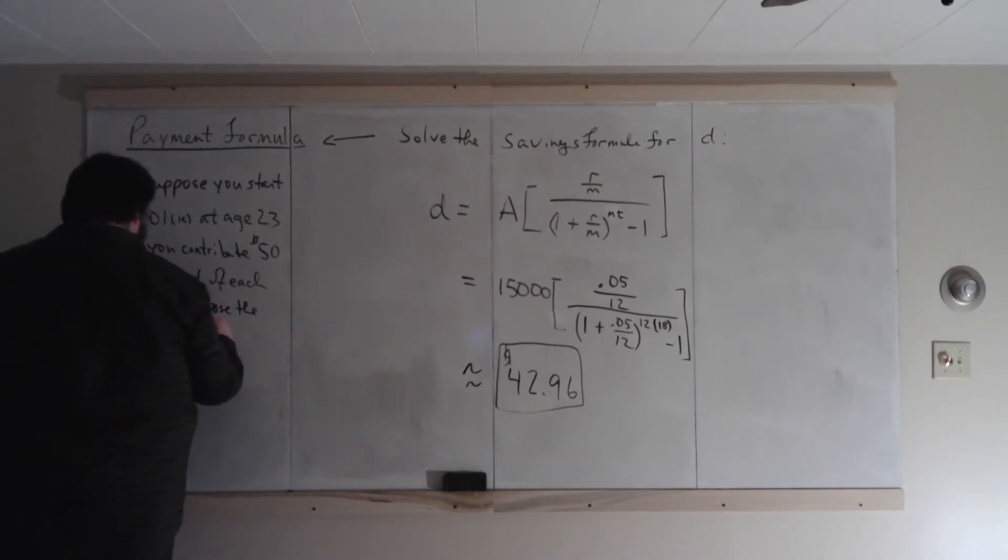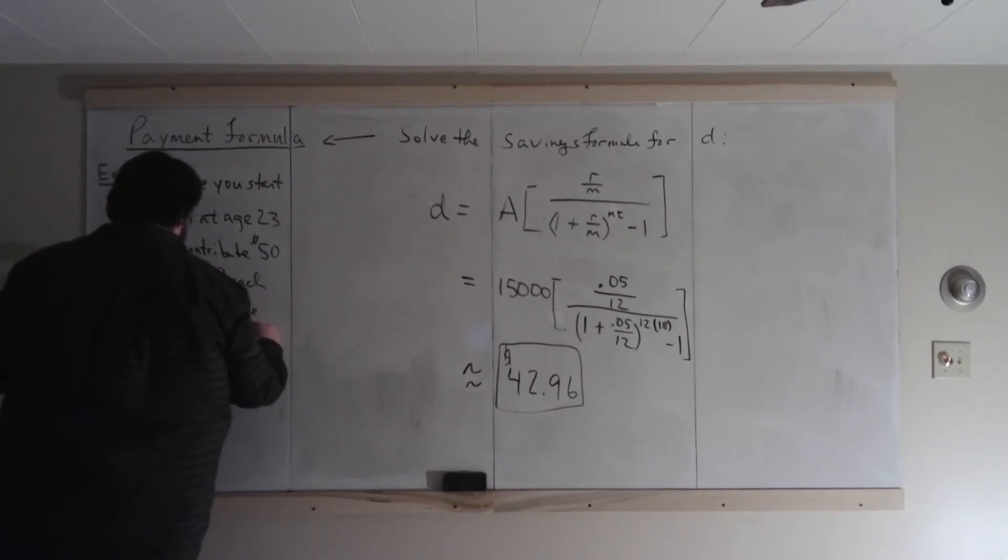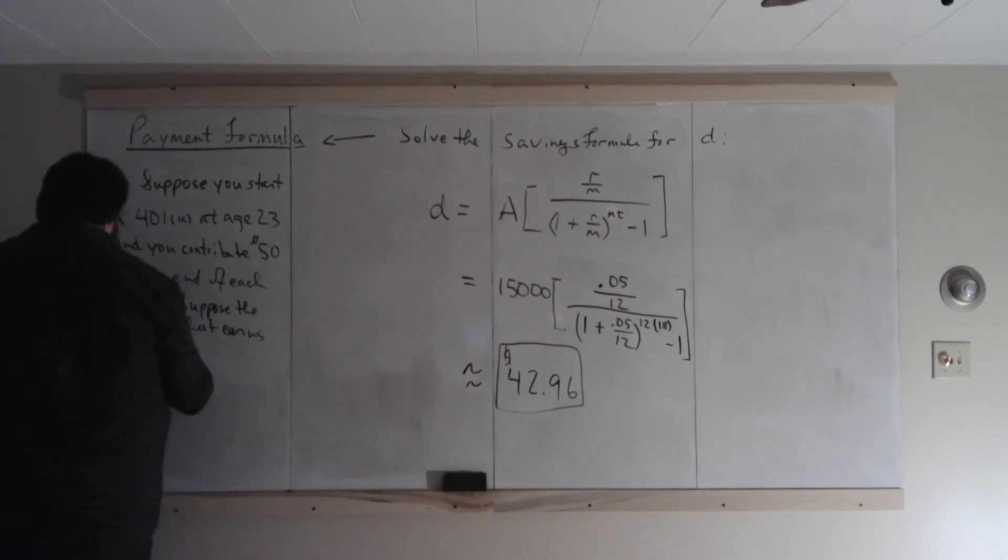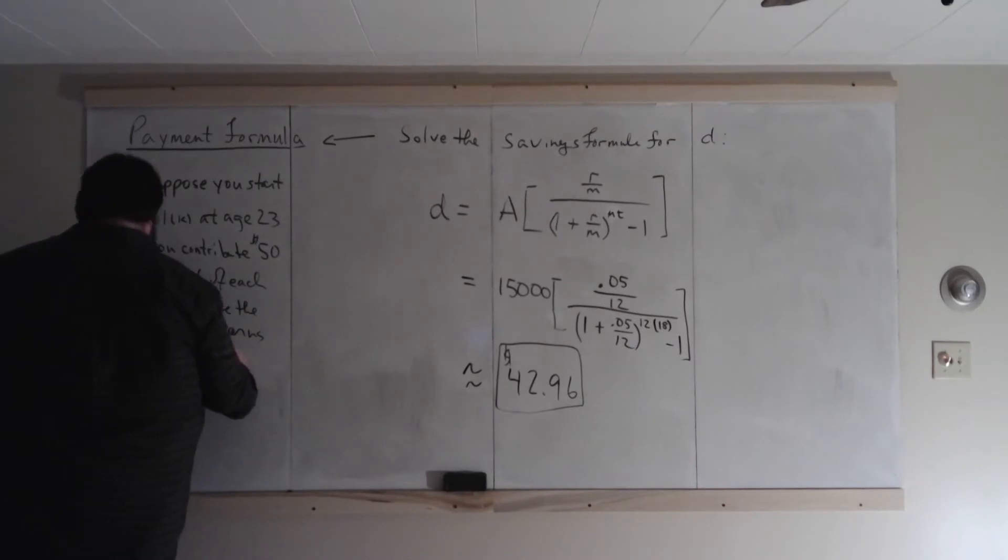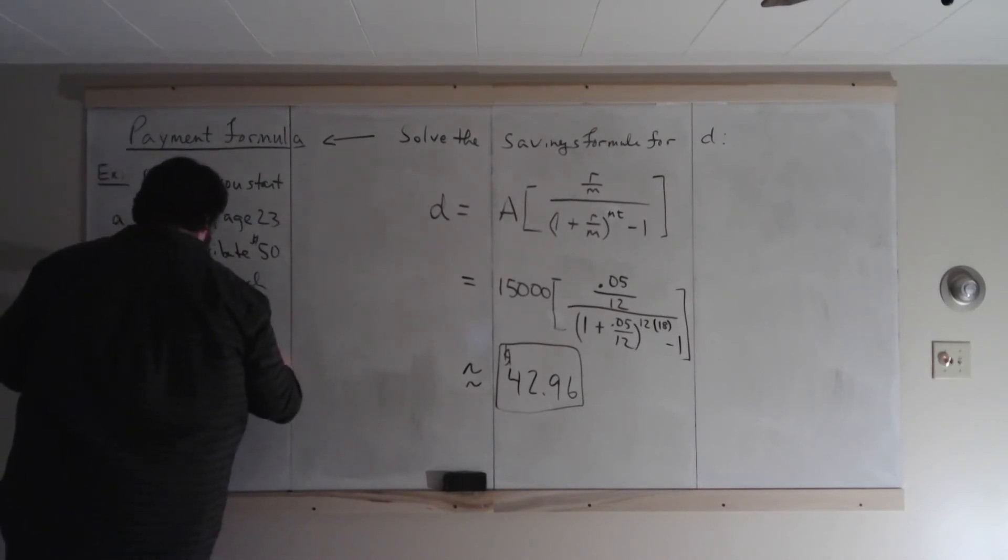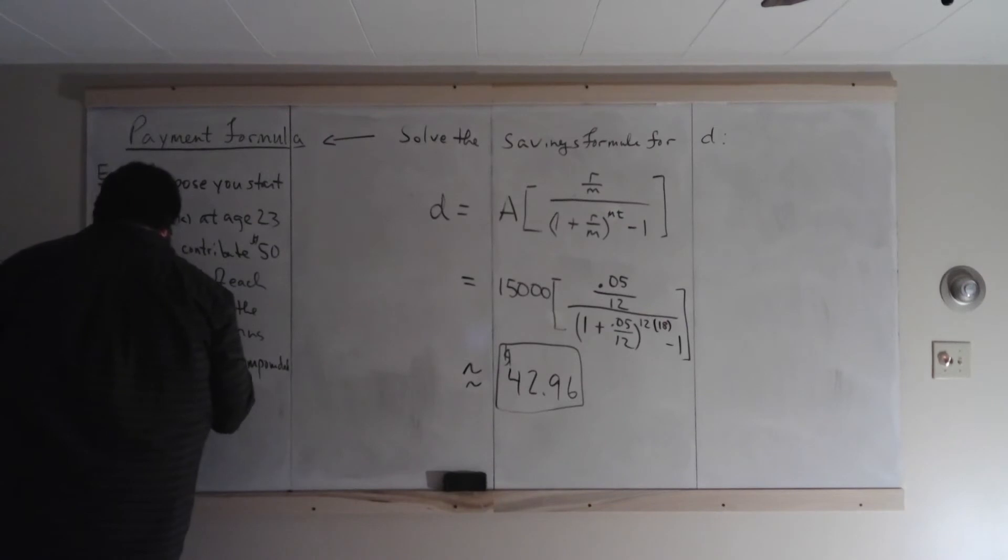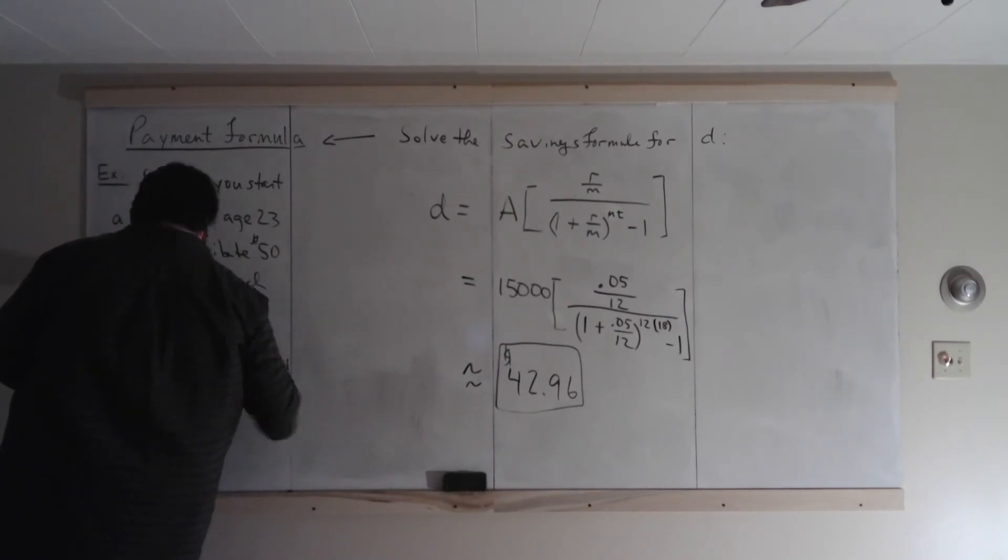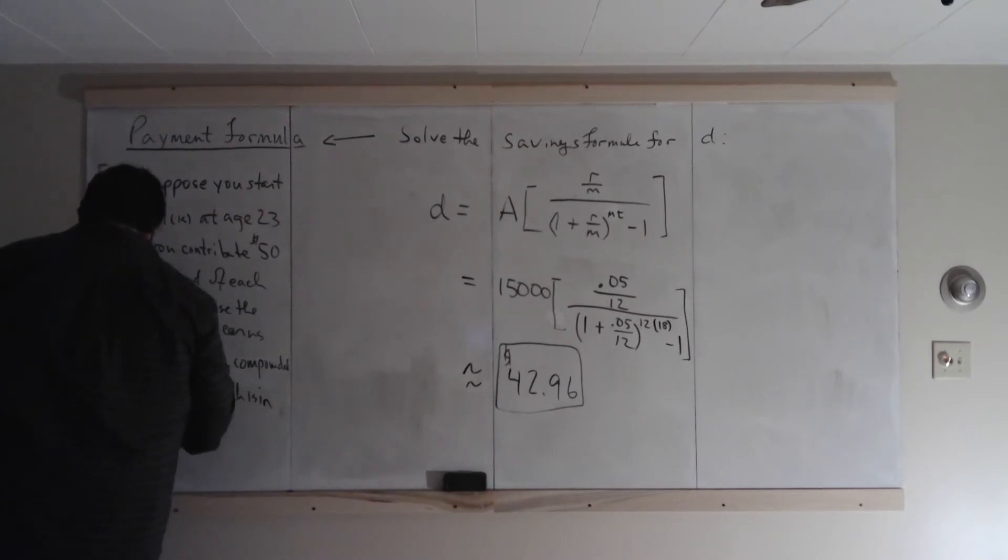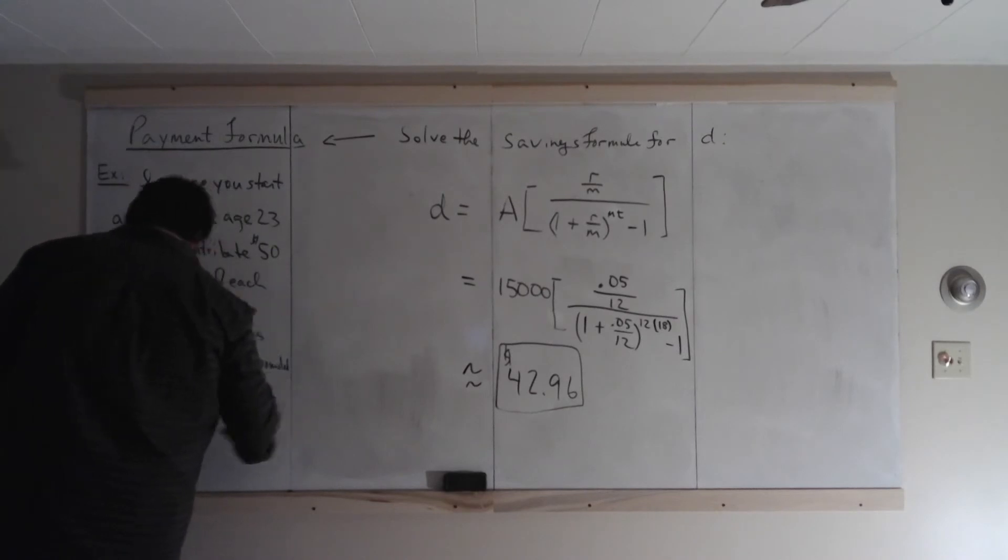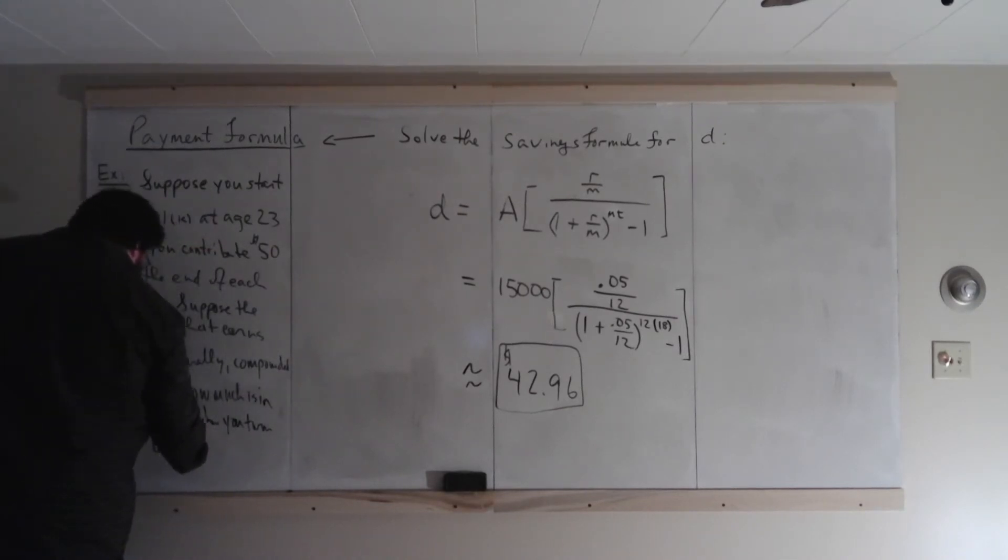that earns 5% annually compounded monthly. How much is in the account when you turn 65? Question with not percent.